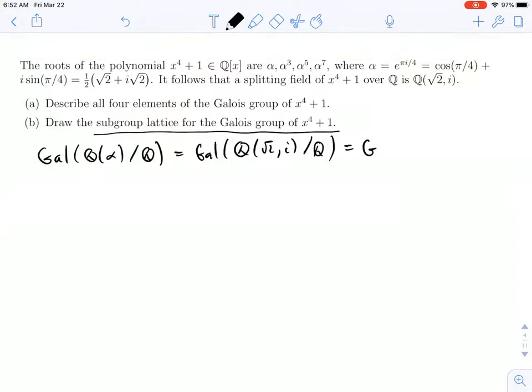We found this to equal a set of four automorphisms: one was the identity, one we called sigma, one we called tau, one we called sigma tau, where each of these elements has order 2, meaning if you square them, you get the identity.